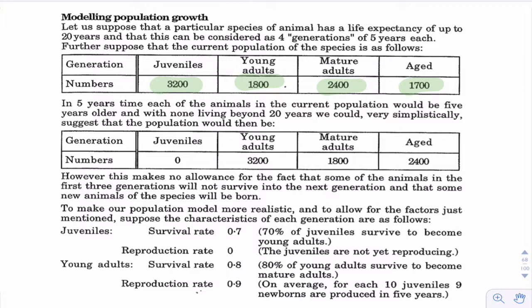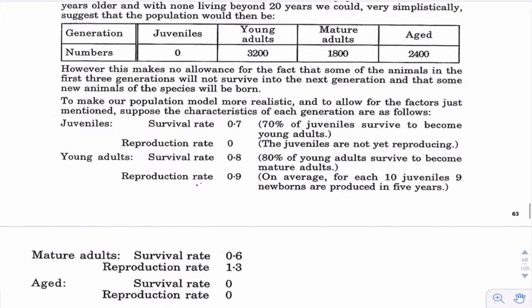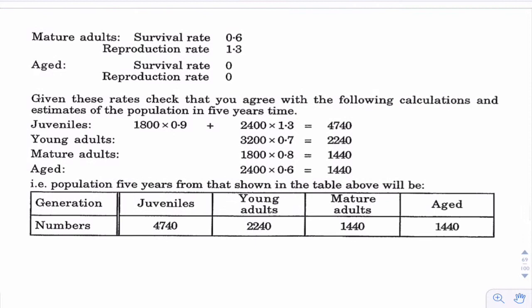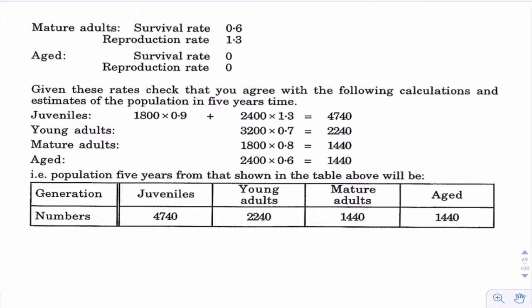What we're going to do is come up with a matrix that describes the reproduction and survival rates of each of the four different groups, and therefore be able to predict the future population based on those probabilities. The juveniles have a 70% survival rate but none of them reproduce. Young adults have an 80% survival rate and 90% reproduction rate — so 100 young adults produce 90 newborns in that five-year period. For mature adults, the survival rate is 60% and the reproduction rate is 1.3, so every 100 mature adults produce 130 juveniles. None of the aged survive or reproduce.